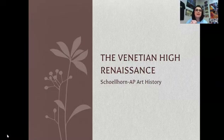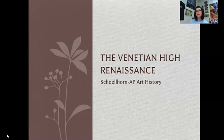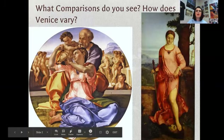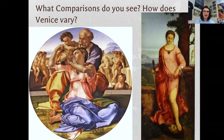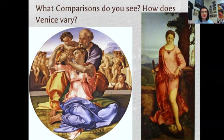Hello art historians and welcome to our next lecture for this unit. We're going to be moving out of the high Italian Renaissance and into the Venetian high Renaissance, which may be a little confusing since Venice is in Italy today. Before we move on, pause the video and look at the work on the left — Michelangelo, high Italian Renaissance — and on the right, a work from the Venetian high Renaissance. Jot down similarities and differences before we continue.